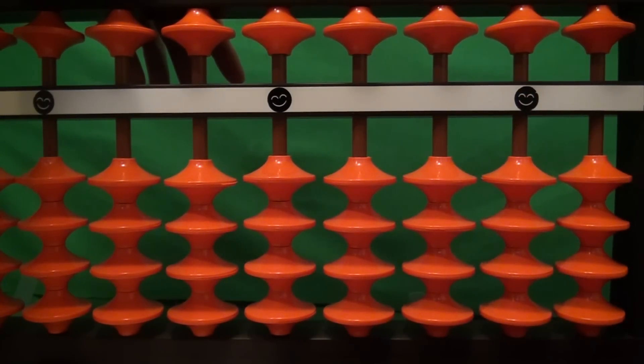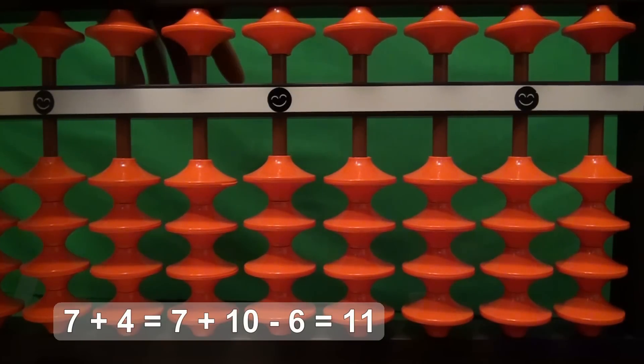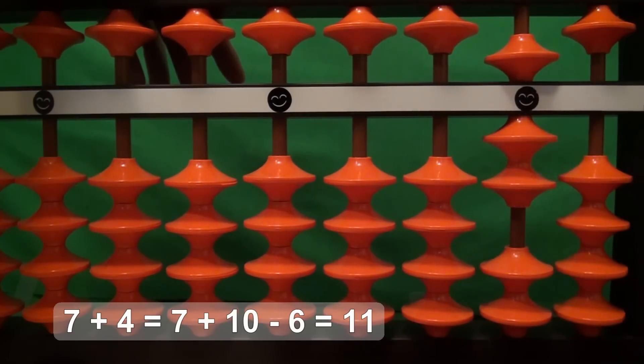OK, the next problem: 7 plus 4. 7 is 5 and 2. We want to add 4, but we don't have 4 beads we can use. We don't have a 5 that we can take down and subtract 1 from.